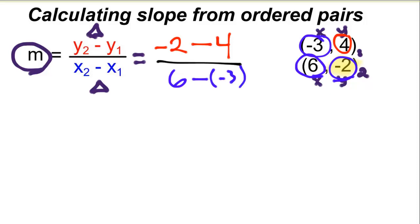And the top number, negative 2 minus 4 is negative 6. And the bottom number is 6 minus negative 3, which is going to give us positive 3, or plus 3. 6 plus 3 gives us 9. And you can see that the slope is negative two thirds.